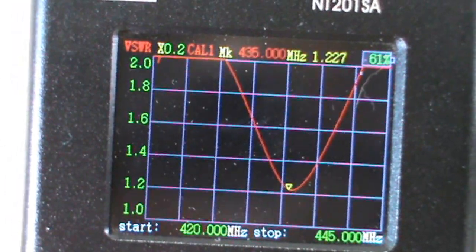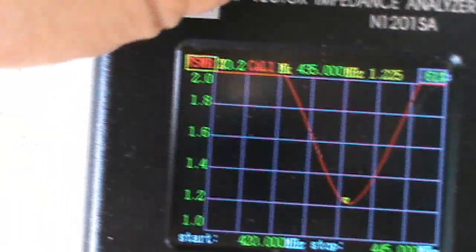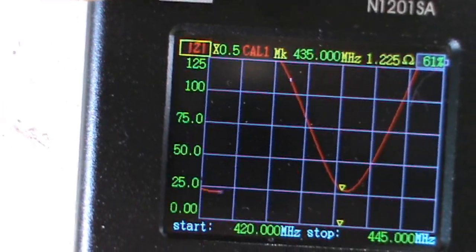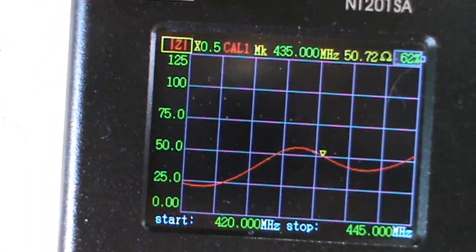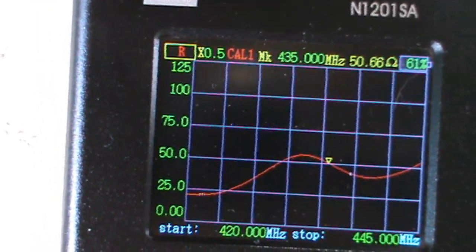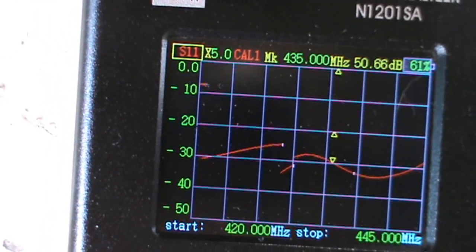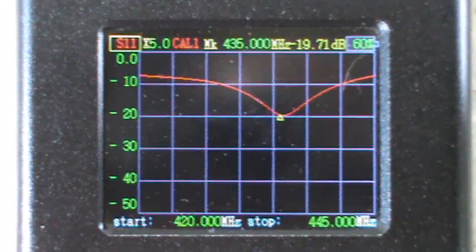Let's check the S11. Impedance is about 50.7 ohms or 51 ohms. S11 is 19.71 dB.